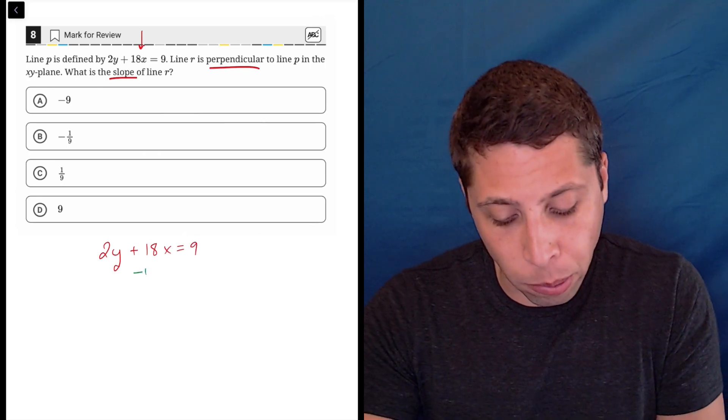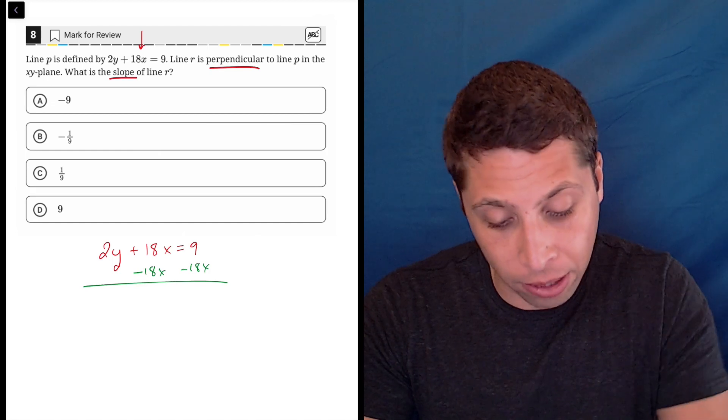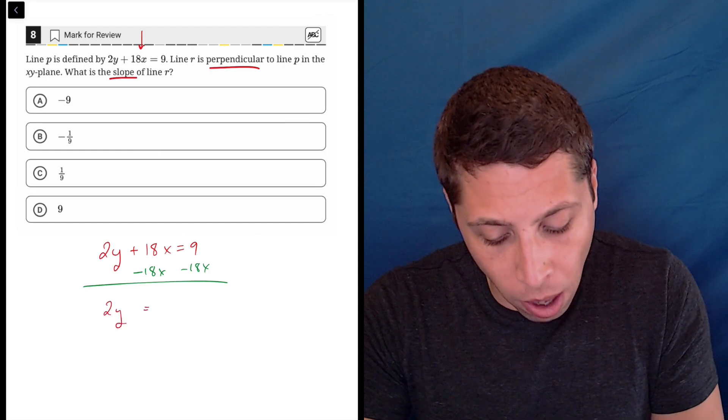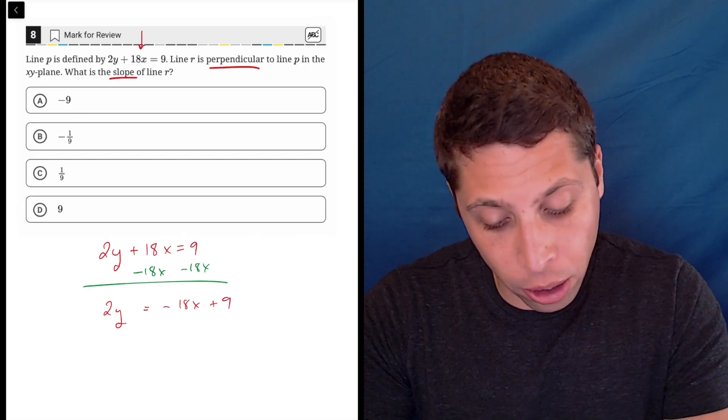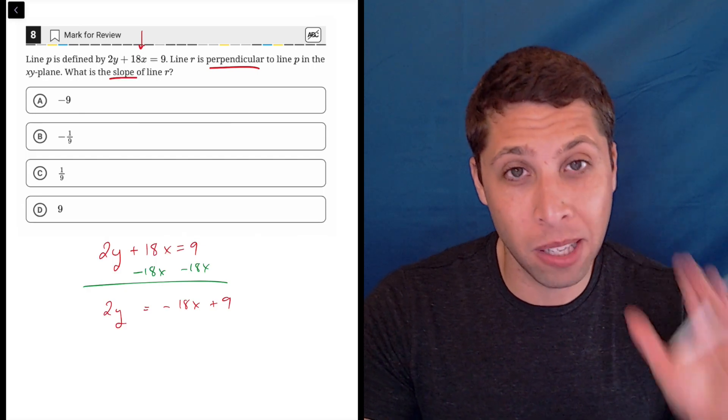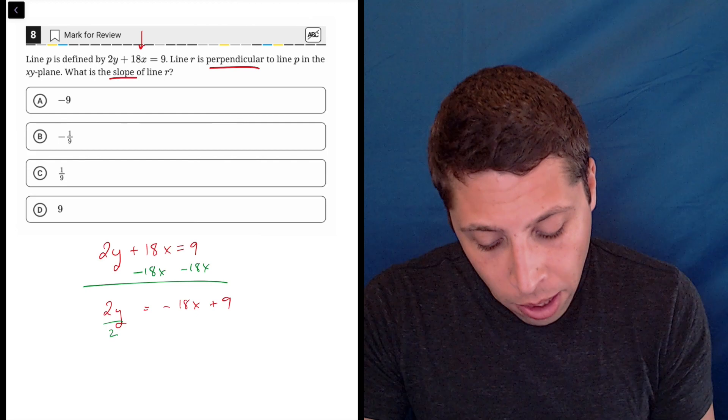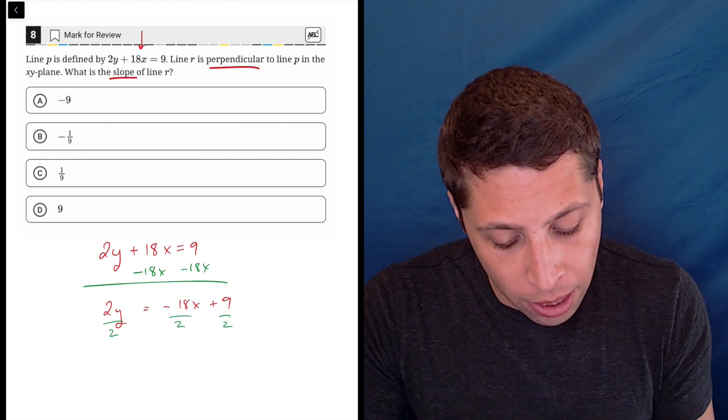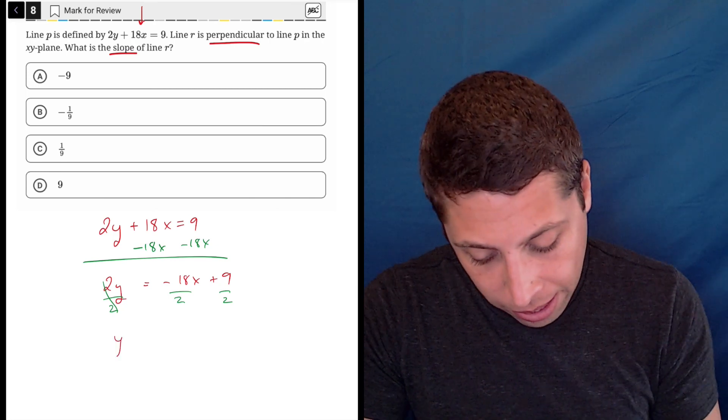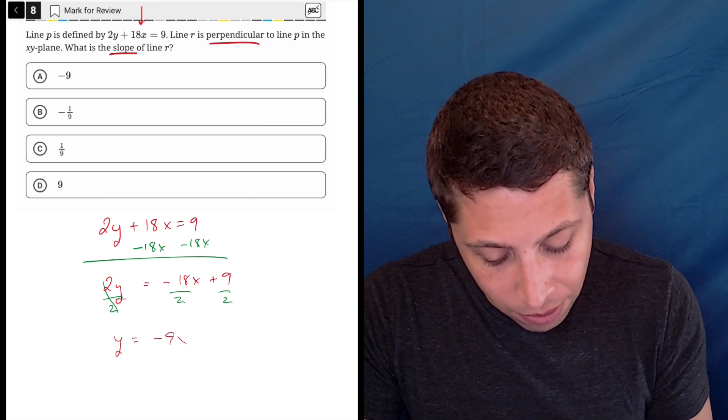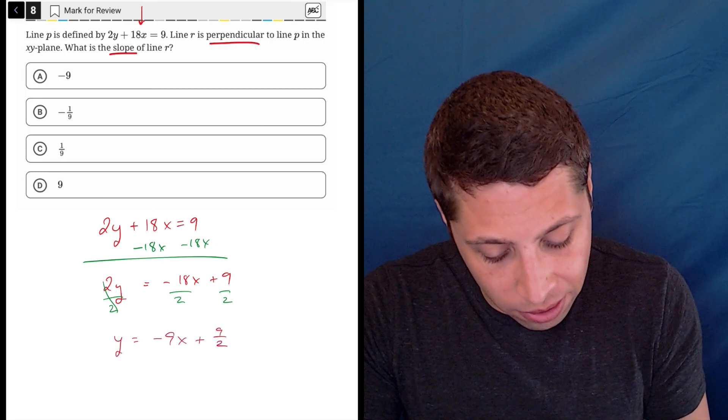We need to get back to y equals mx plus b. So I'd start by subtracting 18x from both sides and get 2y is equal to negative 18x plus 9, but that's not good enough. Y equals mx plus b means y has to be completely alone, so I would need to divide by 2, and it's going to cause a little bit of a problem with the 9 because we now have a fraction which is messy, but that actually doesn't matter.